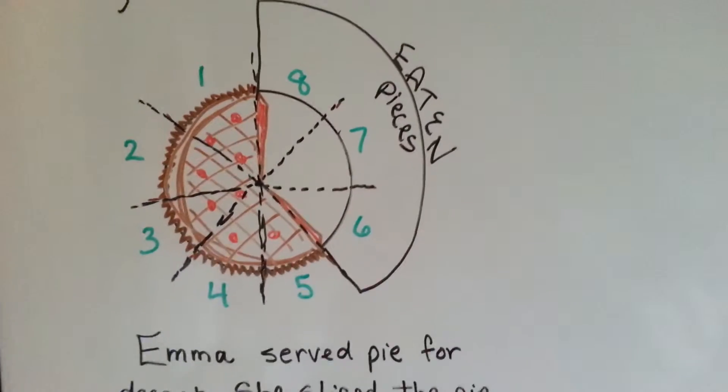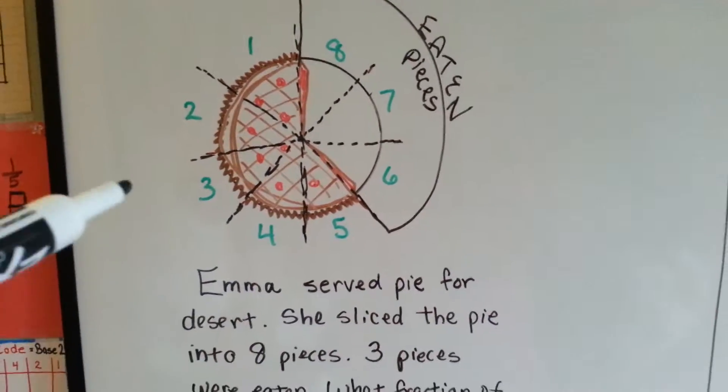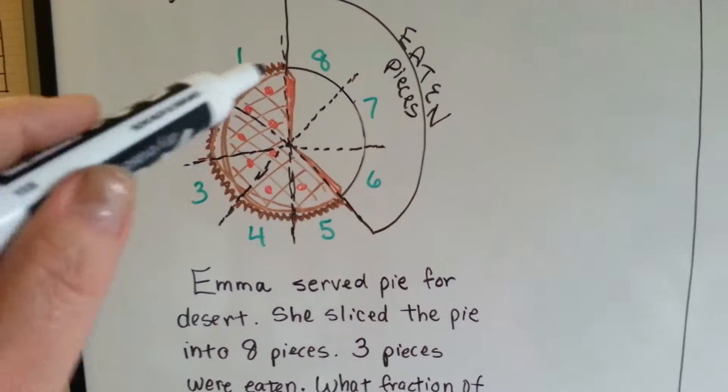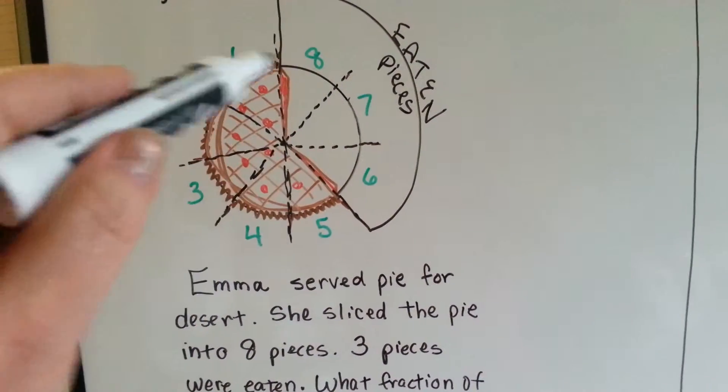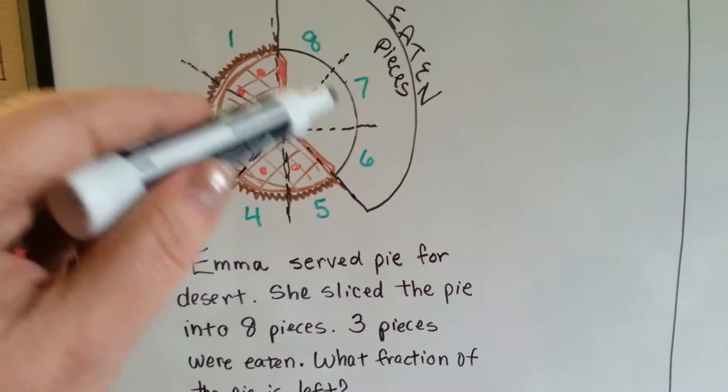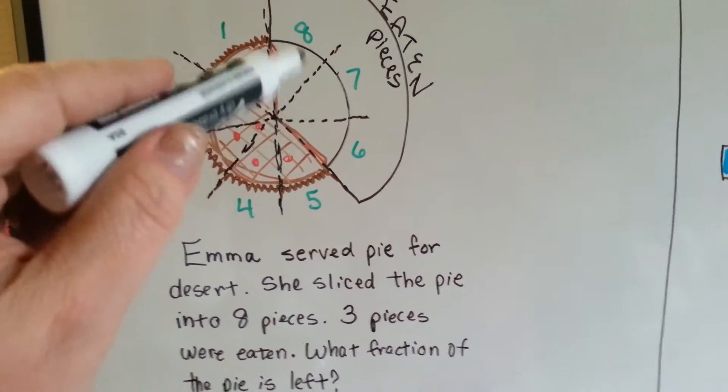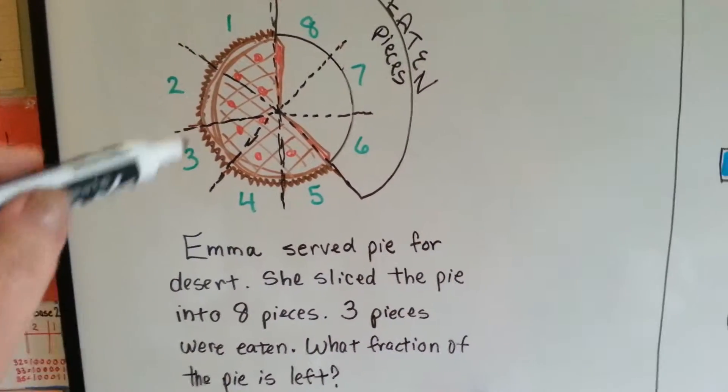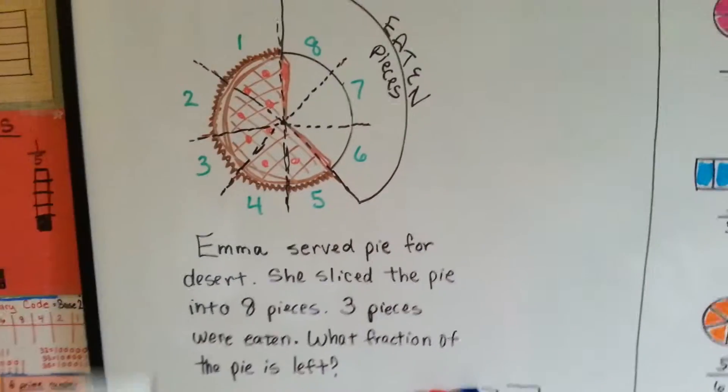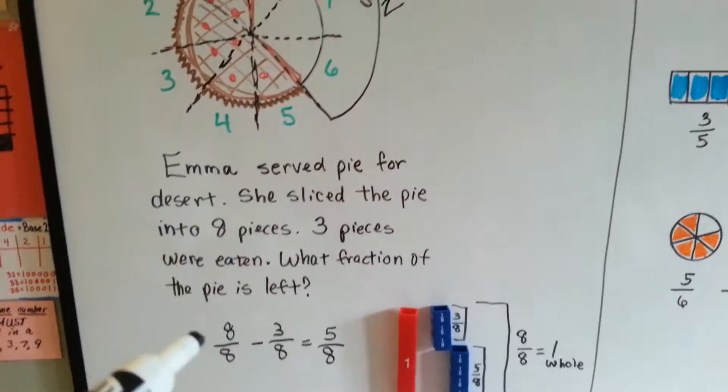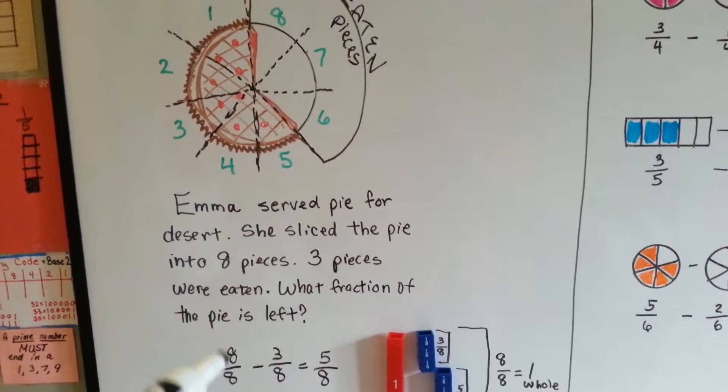So, let's look at this pie that Emma made. She served pie for dessert and she sliced the pie into eight pieces, eight equal pieces. Three pieces were eaten. What fraction of the pie is left? Well, what did she start with? She started with eight eighths of a pie.